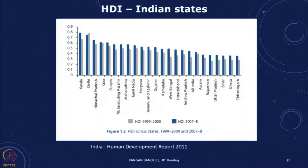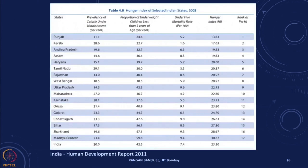For India, the human development indicator has been increasing over time and is now a little above 0.6. Within the country you can also look at HDI for different states — though this is not published every year. Kerala, Delhi, and Punjab seem to be doing well in terms of HDI, while Uttar Pradesh, Bihar, and Orissa are still relatively poor in quality of life. As energy use develops, the HDI can improve.